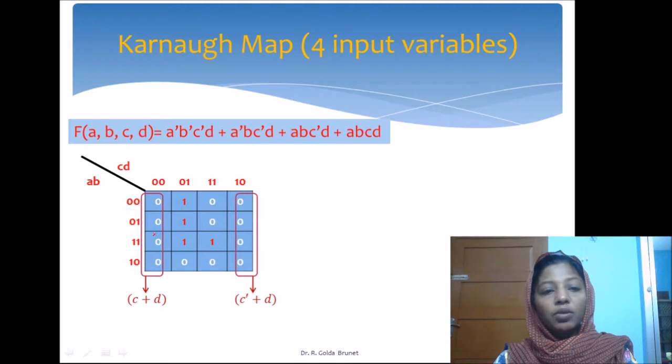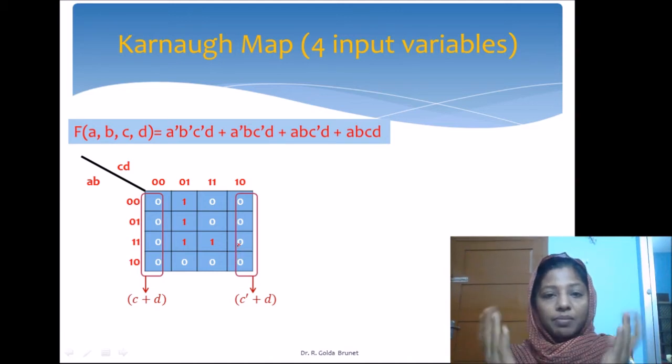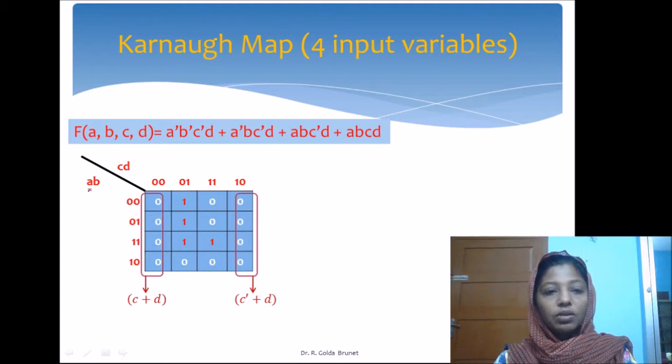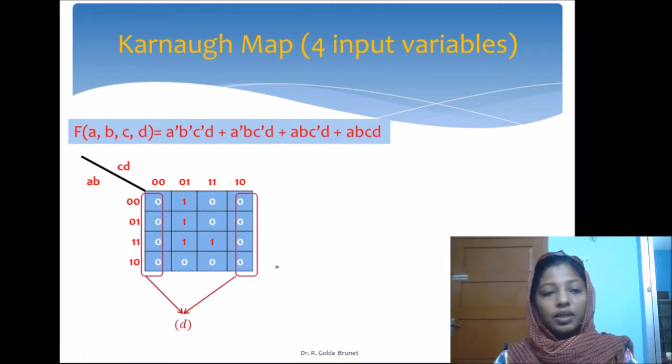But these two columns are adjacent when we fold the map vertically, so we need not group these four zeros and these four zeros separately. We can group all eight zeros together and form a single block. All a and b values are varying, and cd in this column is 0 0 and in this column is 1 0. What is common is only the 0, so d will appear in the product term.